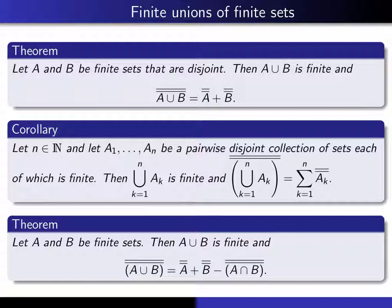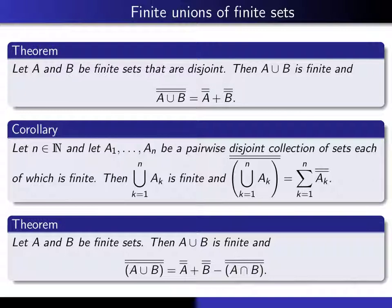This next theorem is also about unions, but this time we're not assuming the sets are disjoint. If you take the union of two sets that may overlap, you can't expect the cardinality to simply be the sum, because you'd be double-counting elements in the intersection. So you have to subtract one copy of the intersection's size. The theorem states that if the sets are finite, the union is always finite, and |A∪B| = |A| + |B| − |A∩B|. This is an elementary case of the principle of inclusion-exclusion.